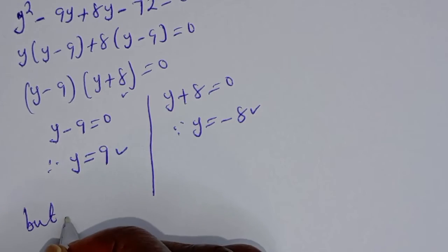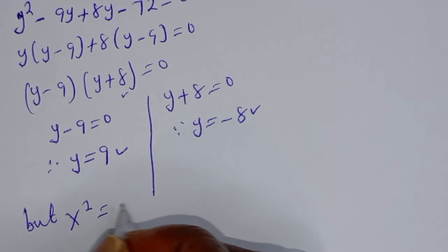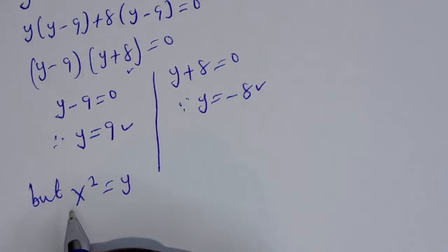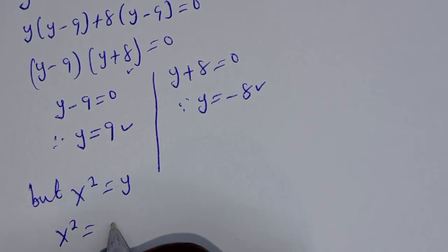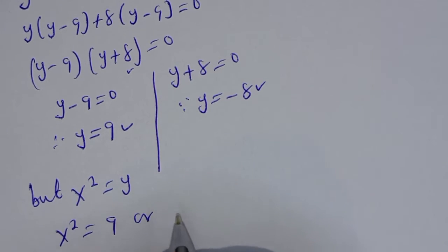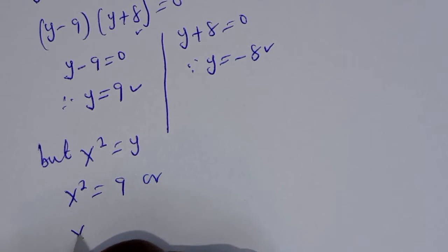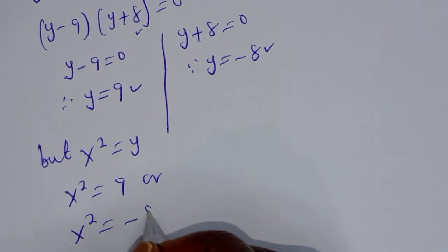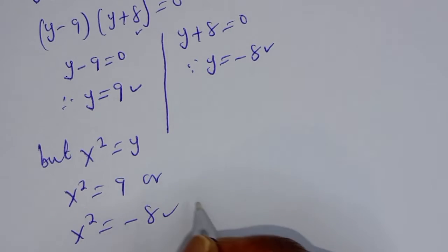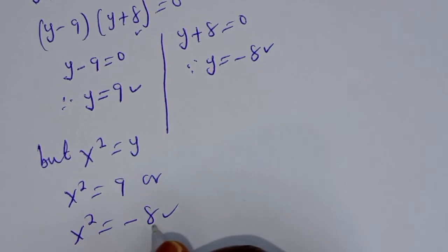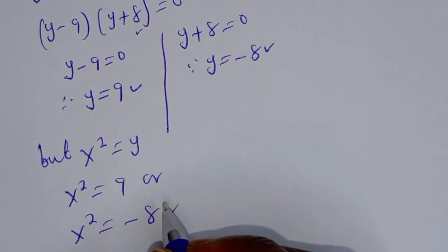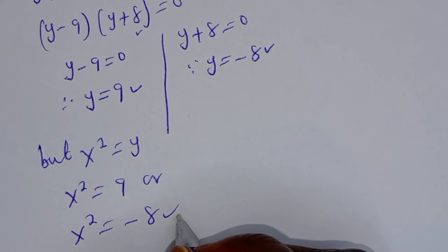But recall x squared is equal to y. Then x squared equals 9, or x squared equals minus 8. But x squared cannot equal minus 8, so that case is rejected.